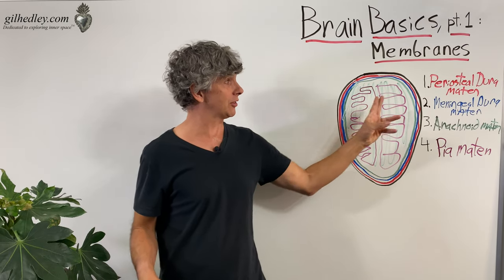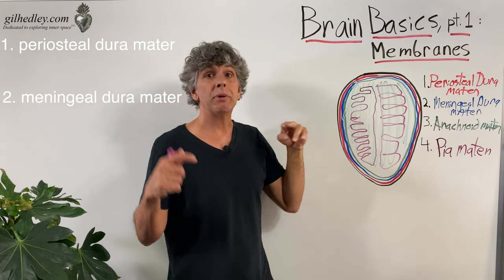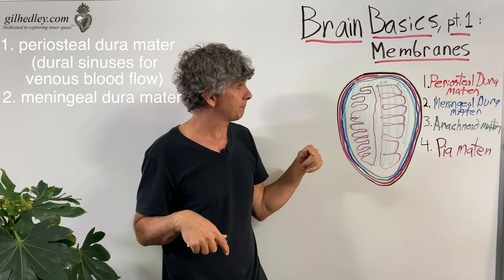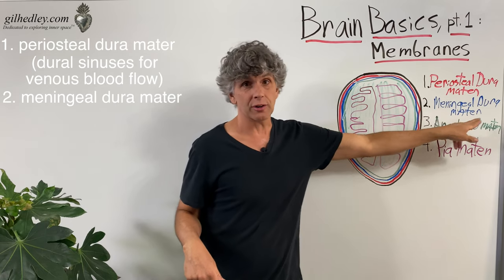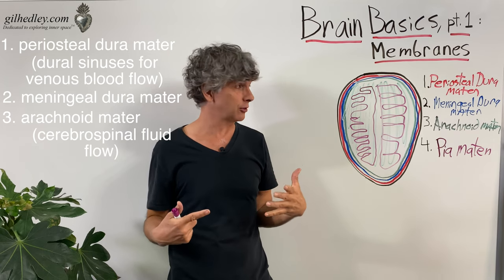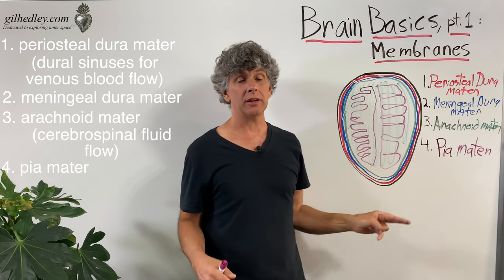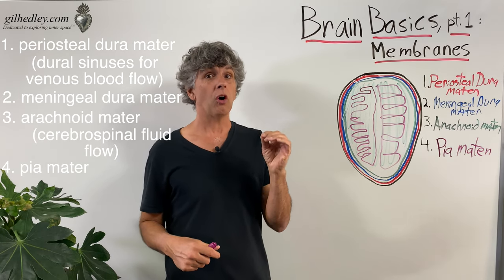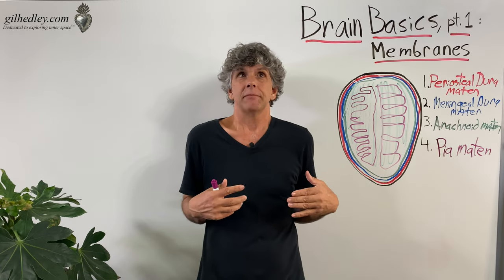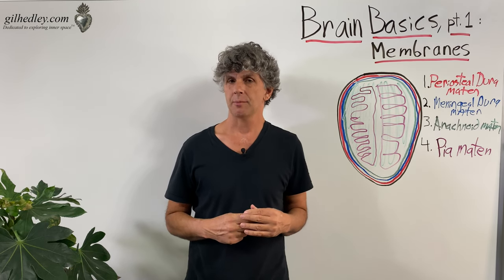So brain basics part one — membranes: the meninges include the periosteal dura mater and the meningeal dura mater, between which flow the venous blood returning from the brain. Adherent to that is the arachnoid mater, beneath which flows the cerebrospinal fluid — between the arachnoid mater and the pia mater, which is the surface or skin of the brain, only two or three cells thick and undissectable. I hope that's a helpful introduction to the meninges.